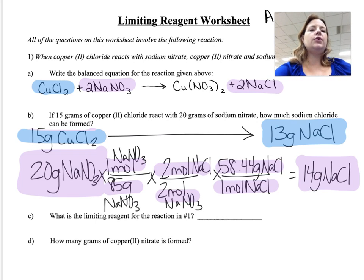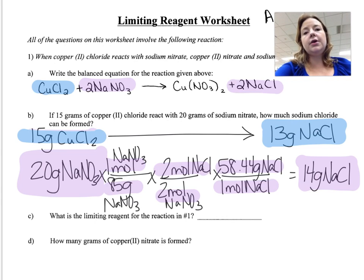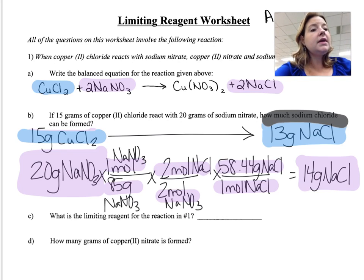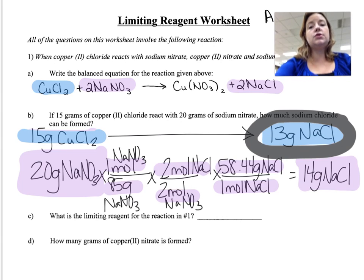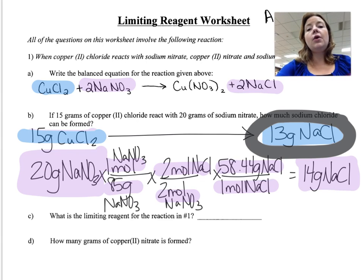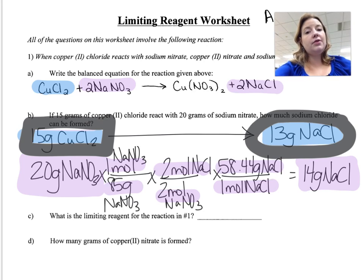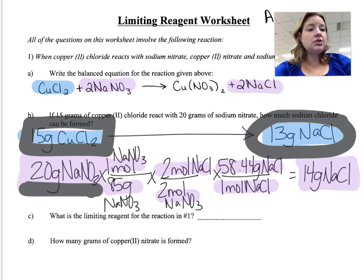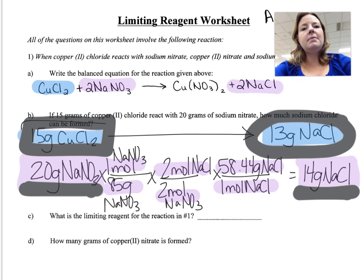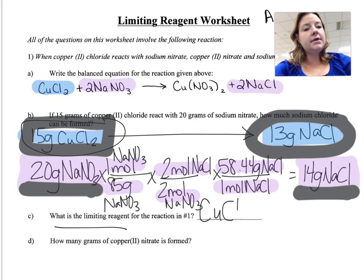If one material can make you 10 pizzas and another can make you 20 pizzas, are you going to be able to make 20 pizzas? No — we always go with the one that's less. I'm only going to be able to make 13 grams of sodium chloride, because even though the other reactant allows 14 grams, my copper chloride only lets me make 13 grams. So copper chloride is the limiting reactant.